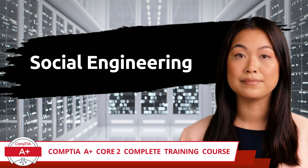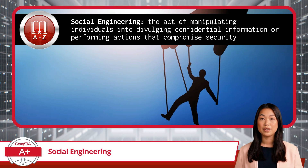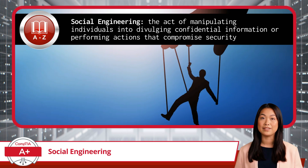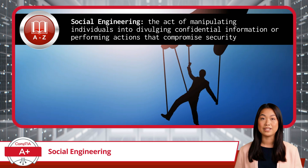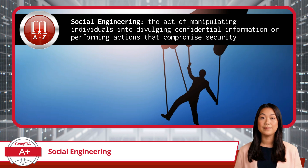Social Engineering. Are you good at getting people to do what you want? If so, you are probably a natural when it comes to social engineering. So what is social engineering and how does it apply to IT? To put it plainly, social engineering is the act of manipulating individuals into divulging confidential information or performing actions that compromise security. This often involves exploiting human trust or emotional responses to gain unauthorized access to sensitive data or systems. Or, as I like to call it, hacking the human.